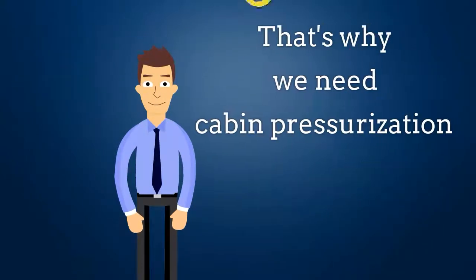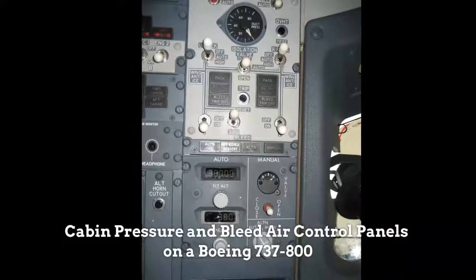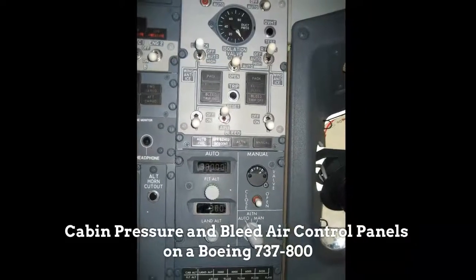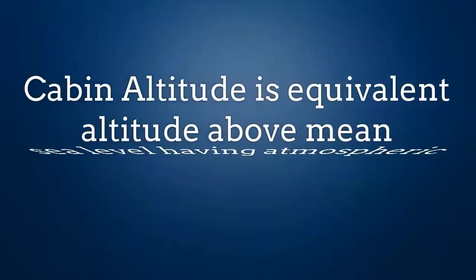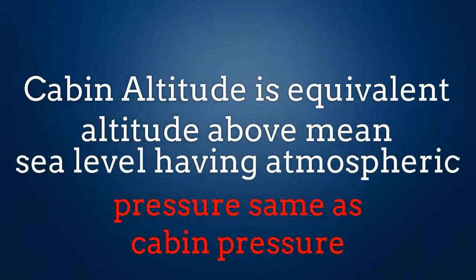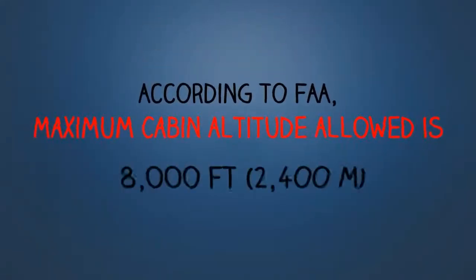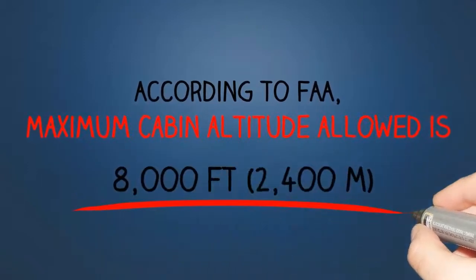Look at the cabin pressure and bleed air control panel on Boeing 737-800. Cabin altitude is equivalent altitude above mean sea level having the same atmospheric pressure as cabin pressure. According to FAR, maximum cabin altitude allowed is 8000 feet.